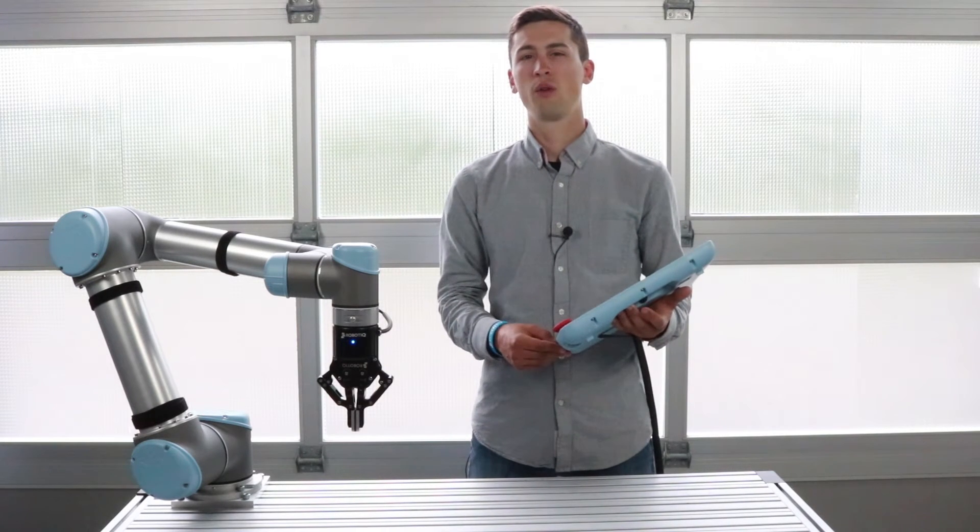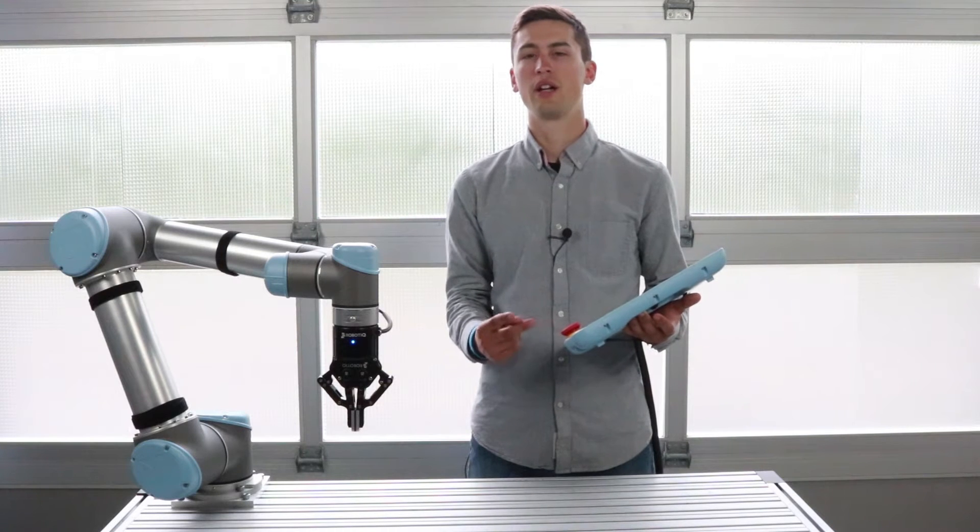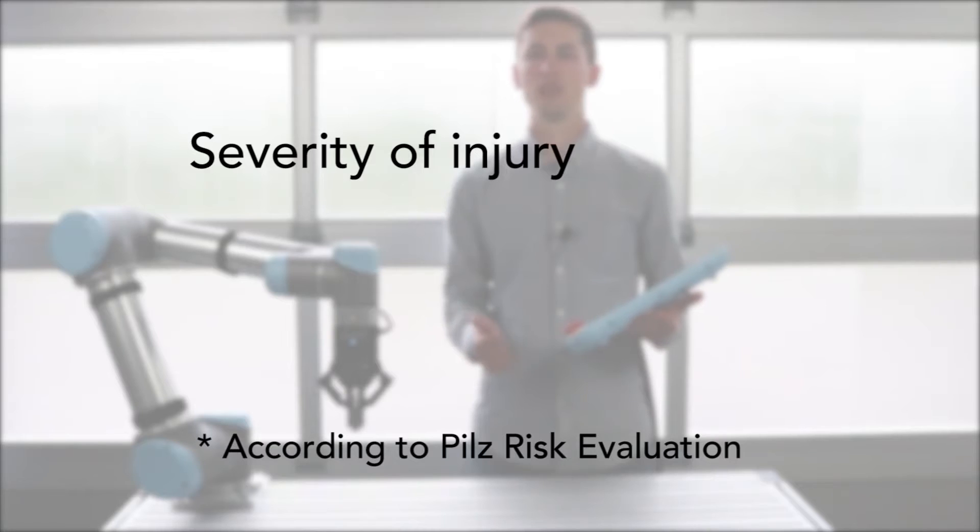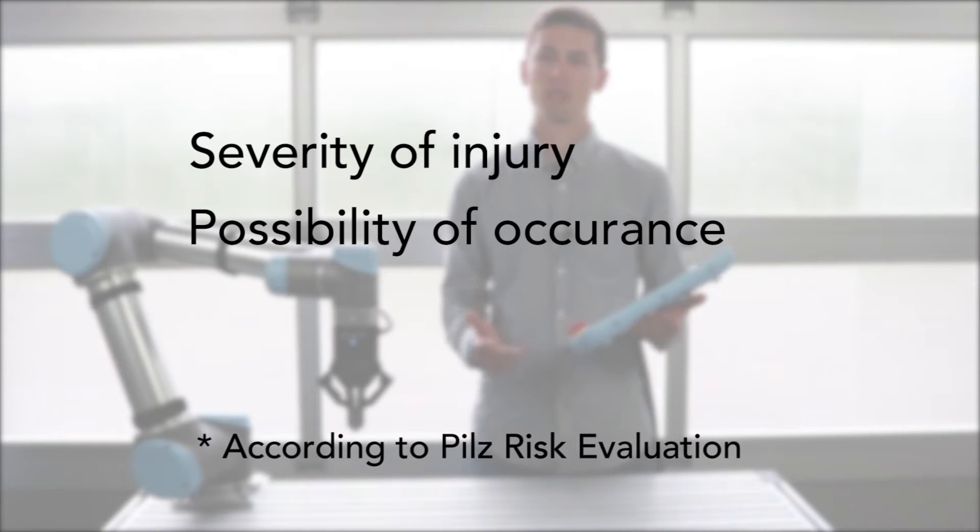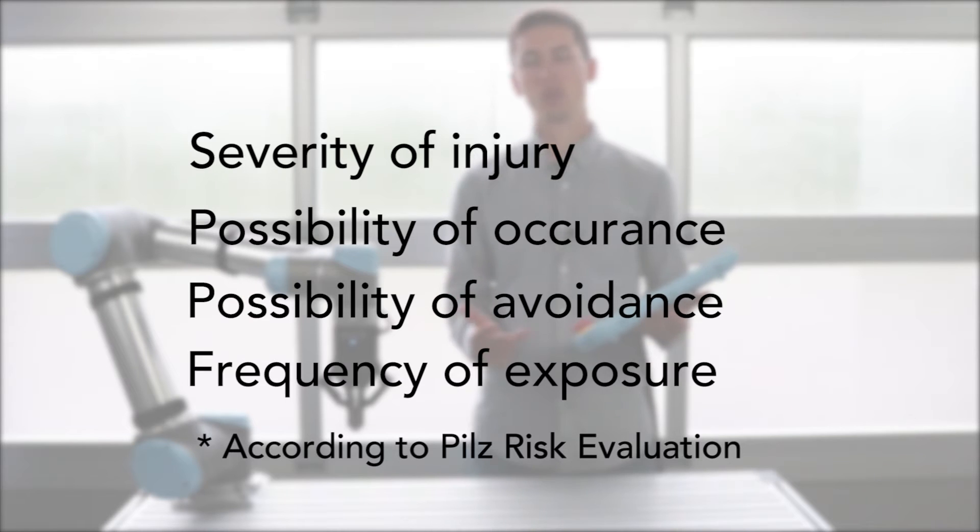The risk is usually evaluated using four different criteria: severity of injury, possibility of occurrence, possibility of avoidance, and frequency of exposure.